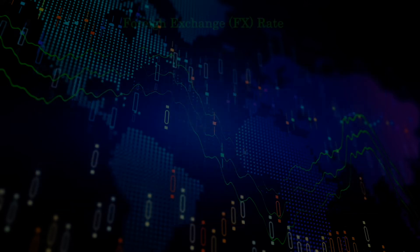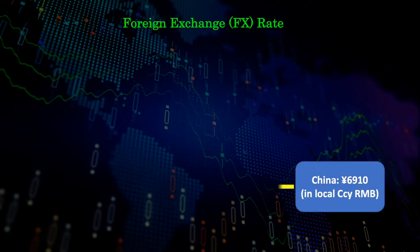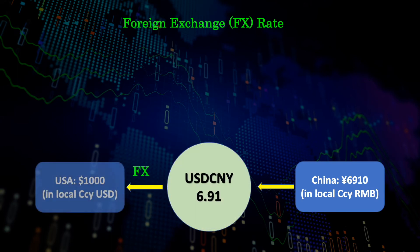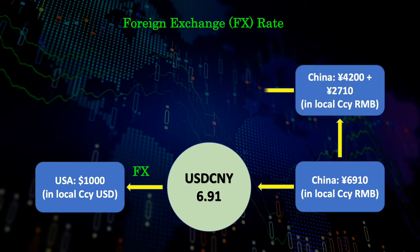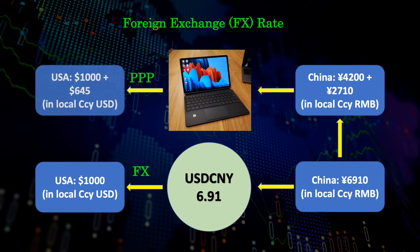If you follow the foreign exchange market, you would know that the market rate for US dollar and Chinese Yuan is about 6.91 right now, but not 4.2. Meaning 1 USD is equivalent to 6.91 Chinese Yuan by the market exchange rate. This is the rate you would trade on most trading platforms, or what you would get if you go to the big banks to convert one currency to the other. If you have 6,910 Chinese Yuan and go to a bank, you would get $1,000 minus some transaction cost. Using the PPP conversion — where 4,200 Yuan is equivalent to $1,000 — 6,910 Yuan can buy roughly one and a half such computers, which if sold in the States would get $1,645.